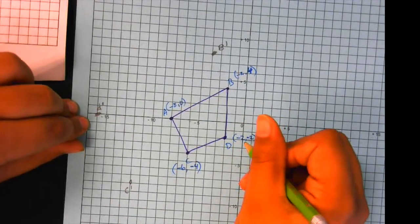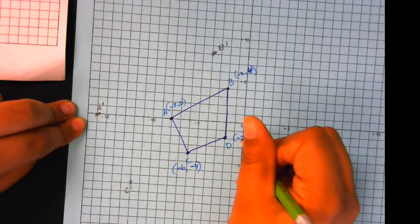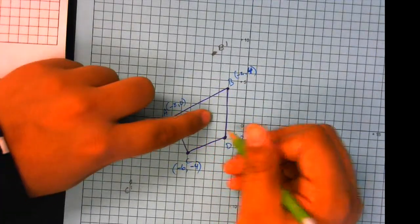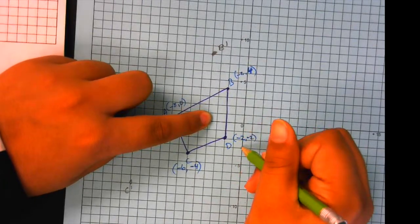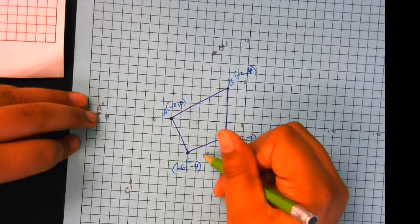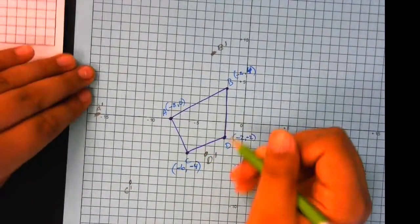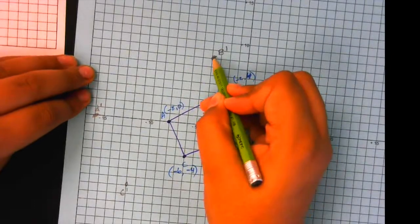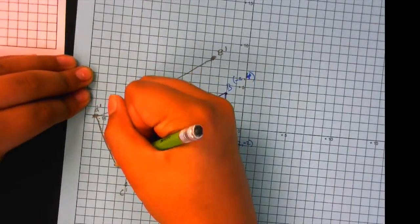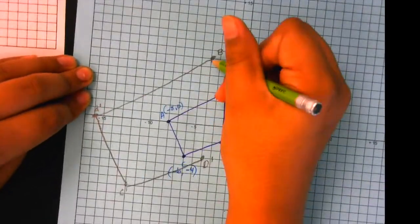And then the last one, D, negative two, negative two. If you multiply both of these by two, negative four and negative four. So negative four over here and negative four right there, which would be over here. So this is D prime. And then you will just match the lines, match the dots, and you will get the shape.